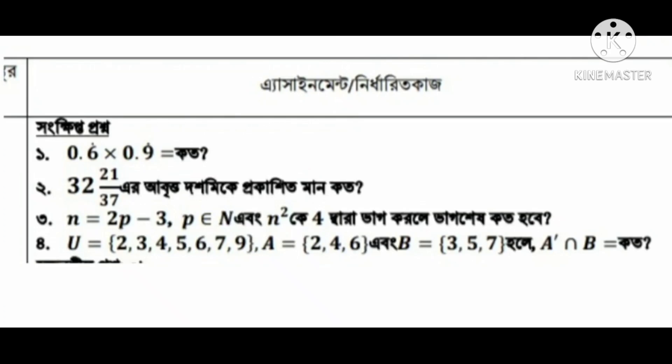ग माझके लाया पहला घञा है — usually we Arab and in OHL: 2, 3, 4, 5, 6, 7, 9.